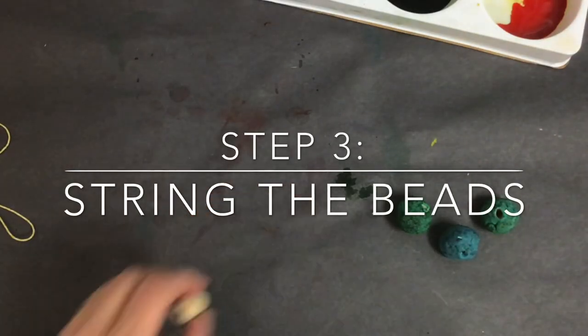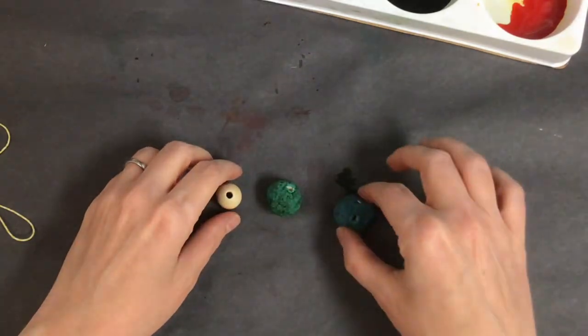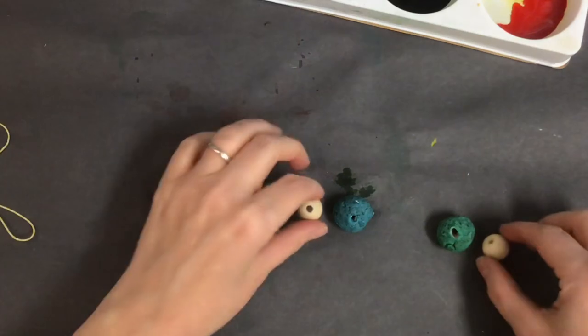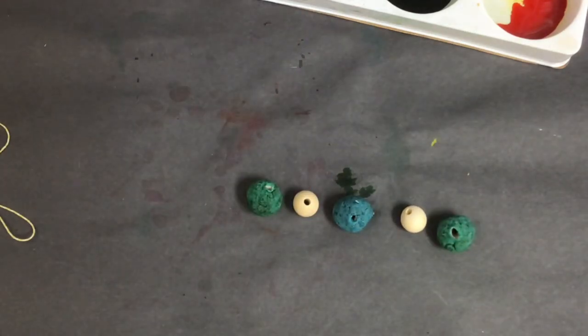Step number three, string the beads. When you string the beads, you want to make sure that you are doing this in a pattern. I have two wooden beads. If you're in the classroom, you'll be allowed to grab up to two wooden beads for your pattern.